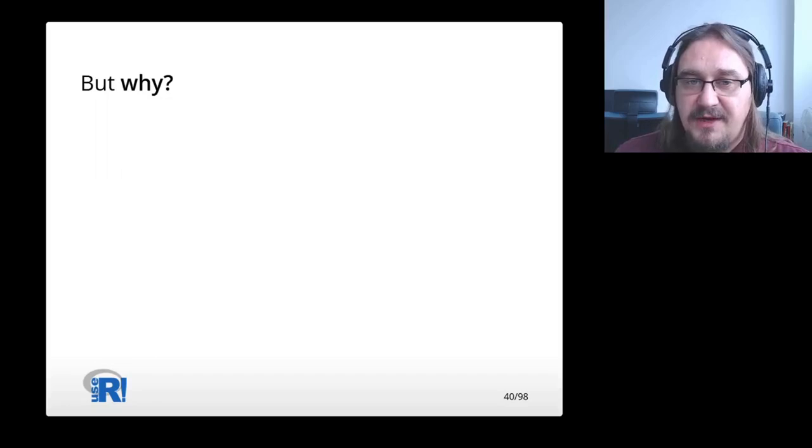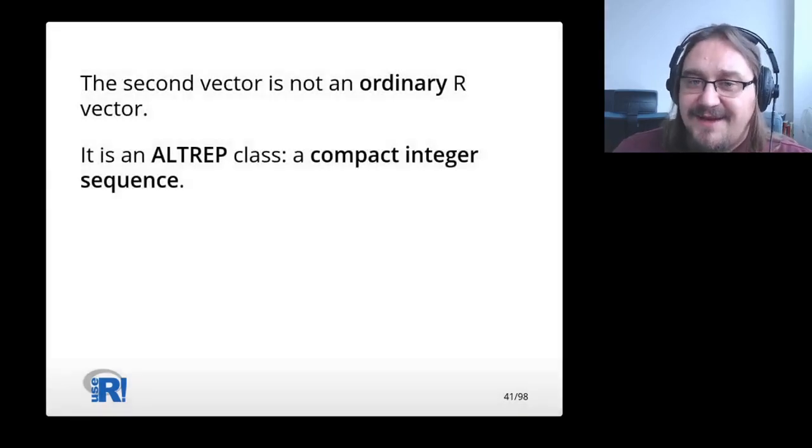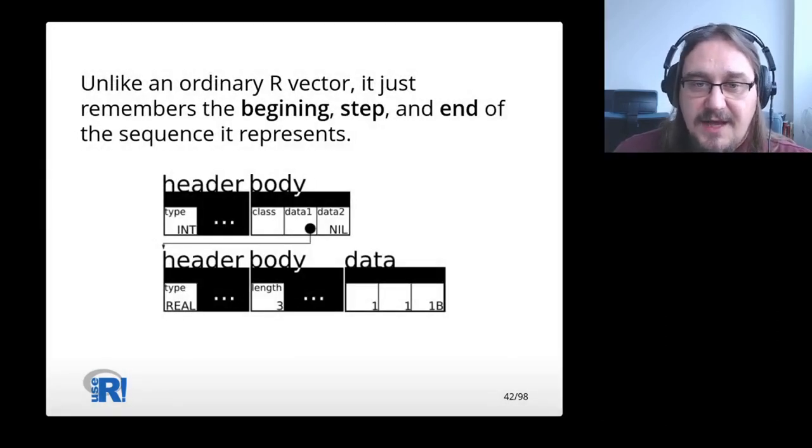But why does this work? Surely we should run out of memory. The second vector is not an ordinary R vector. It is an Altrep class, a compact integer sequence. Unlike an ordinary R vector, it just remembers the beginning, step, and end of the sequence it represents.